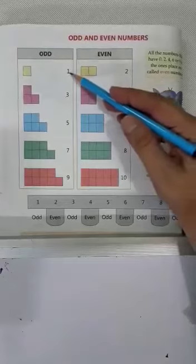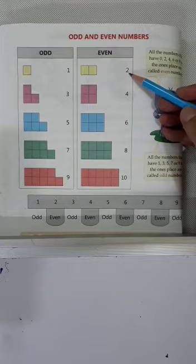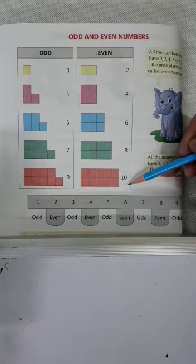Odd numbers are 1, 3, 5, 7, 9 and even numbers are 2, 4, 6, 8 and 10.